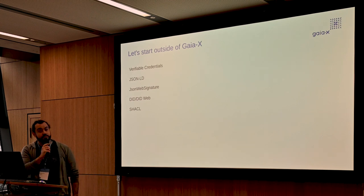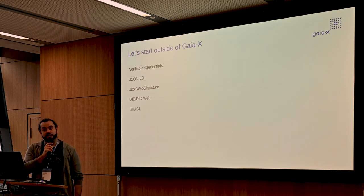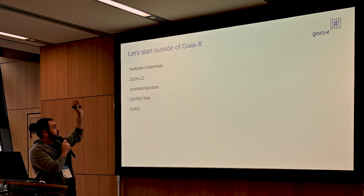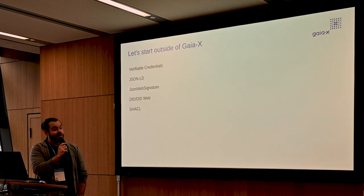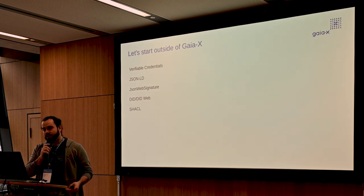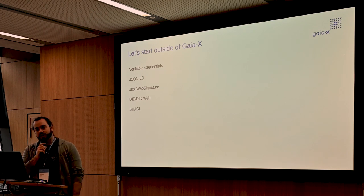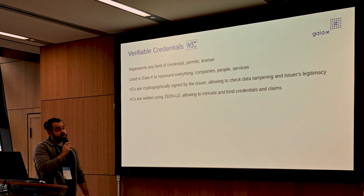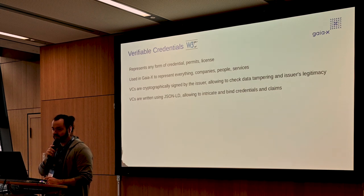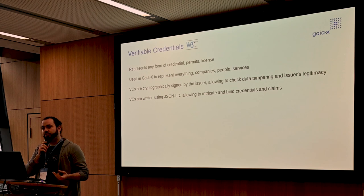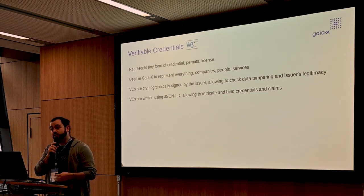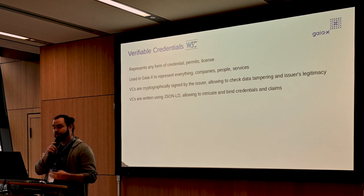First, we will talk about stuff that is not specified by GaiaX — specifications we are using: verifiable credentials, JSON-LD, JSON web signature, DID, and SHACL in GaiaX. The first is verifiable credentials, a specification from the W3C used to represent any form of credential — a permit, a license, a passport, your diploma — you could have it in the form of a verifiable credential.